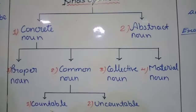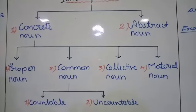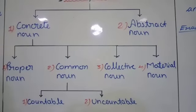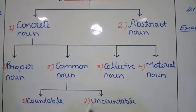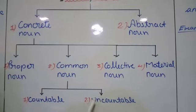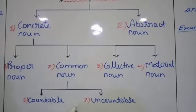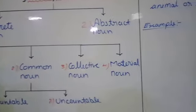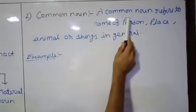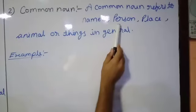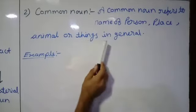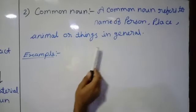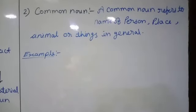Common noun is divided into two parts: countable noun and uncountable noun. What we are able to count comes within countable noun, and what we are not able to count comes within uncountable noun. A common noun refers to the name of a person, place, animal or things in general — those are called common nouns.